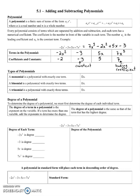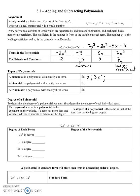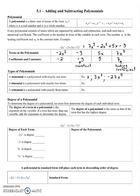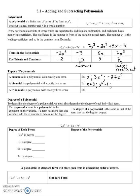There are different types of polynomials. A monomial is a polynomial with exactly one term — for example, x, 3x squared, or negative 27x to the ninth. A binomial is a polynomial with exactly two terms — for example, x plus 3, x squared minus 1, or 3x to the fifth plus 2x.